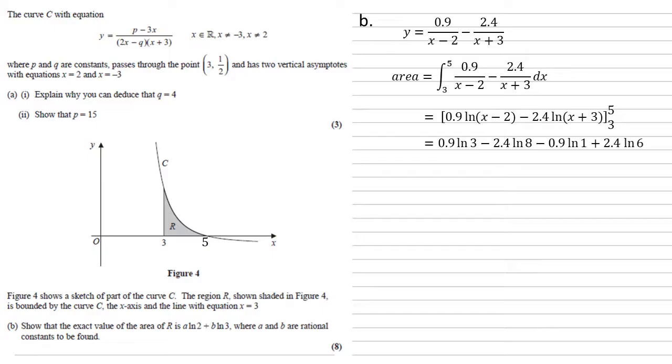We need this in the form of a ln 2 plus b ln 3. So we need to sort out the ln 8, 1 and 6 that we've got in there. Well 8 is the same as 2 cubed and 6 is 2 times 3, so we can rewrite those. And we know that ln 1 is equal to 0, so that has disappeared.